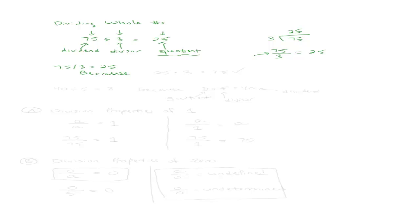Division and multiplication are related to one another. We know that 75 divided by 3 is 25, and the reason is if you take your quotient times your divisor, you get your dividend back. So 25 times 3 gives me 75. Just like addition and subtraction were related, multiplication and division are related as well. For example, 40 divided by 5 — we know that's 8 because 8 times 5 gives me 40. If I take my quotient times my divisor, I should get my dividend back. That's how we check if we did something right.